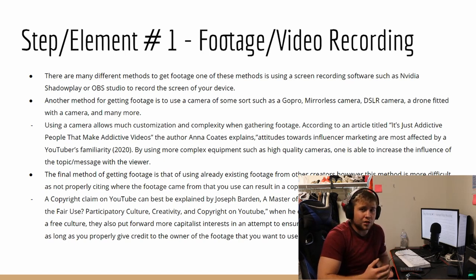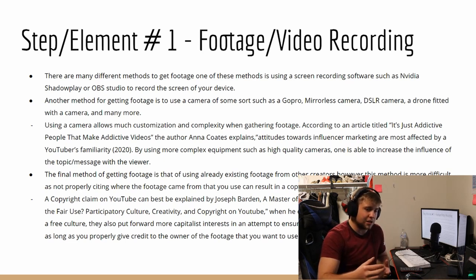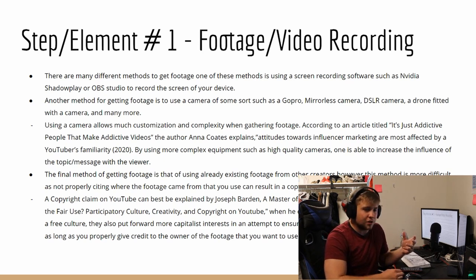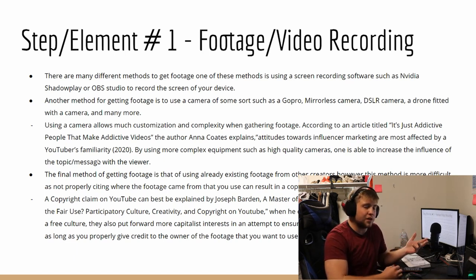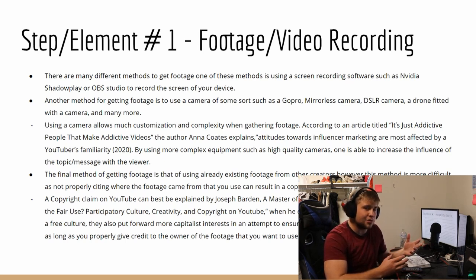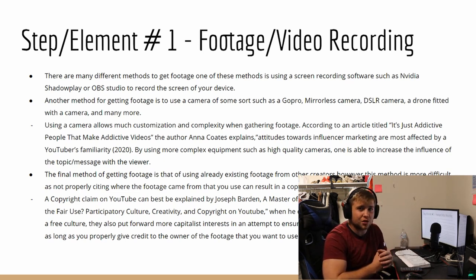The third way of getting footage is using footage that already exists. Say you're on YouTube and you find some cool meme or something funny that you wanted to adjust and then post as your own — you have to give them credit, because YouTube has really strict copyright claims and you don't want those. You can use other people's stuff, you just have to make sure to give them credibility.